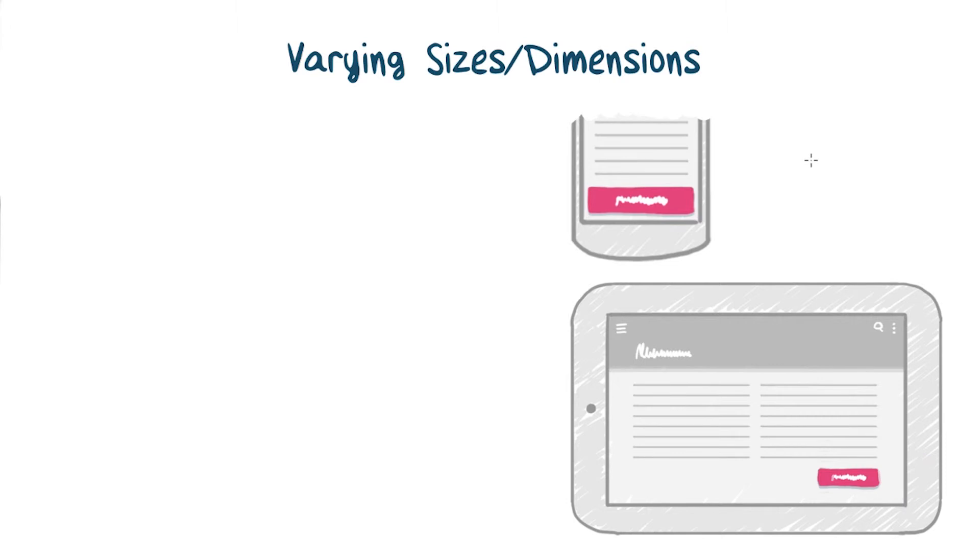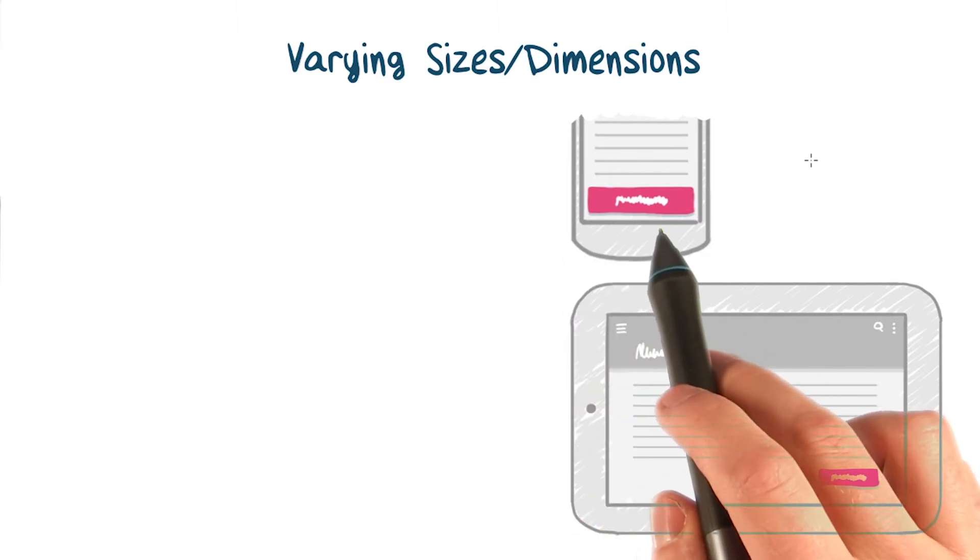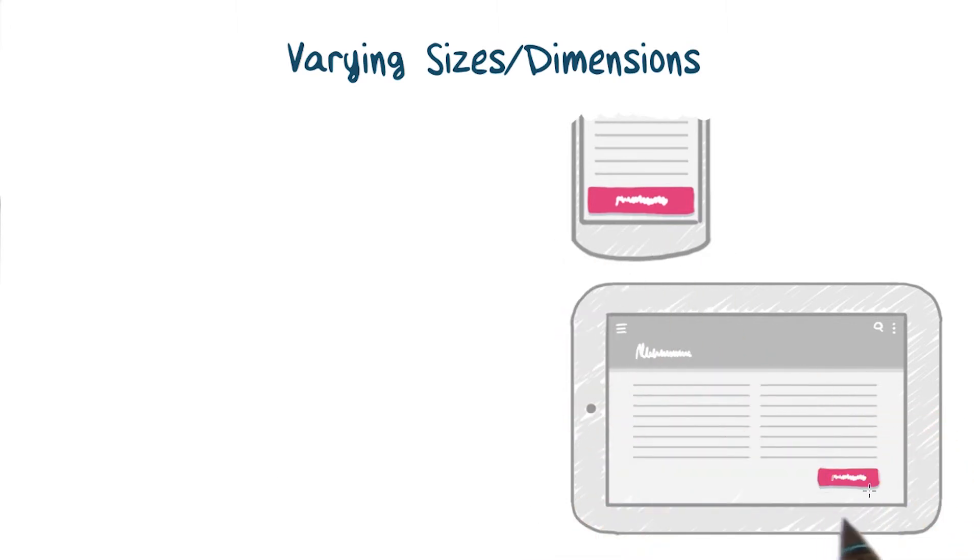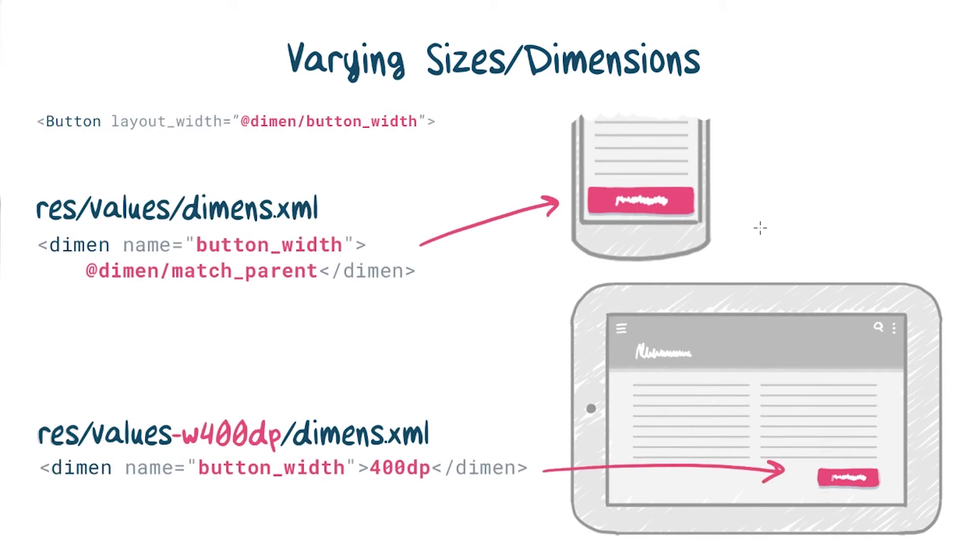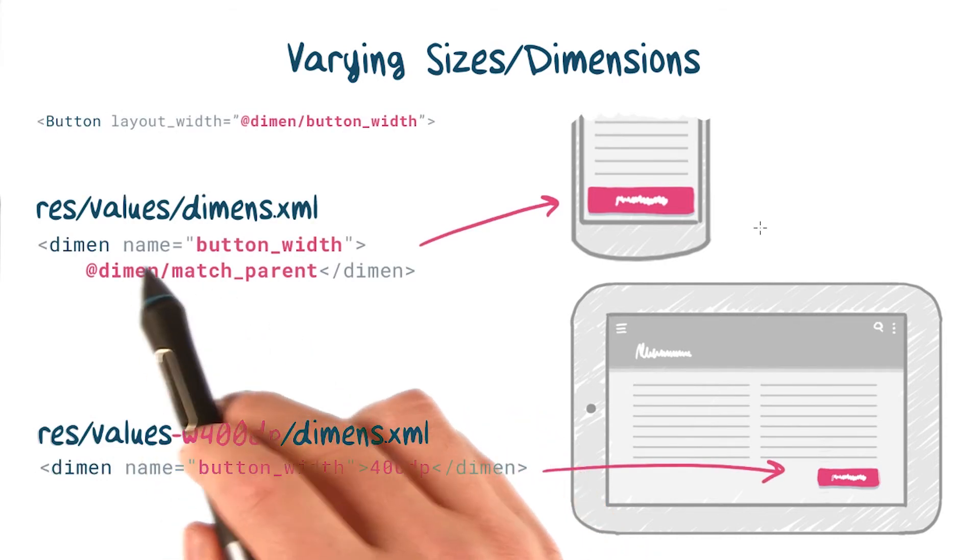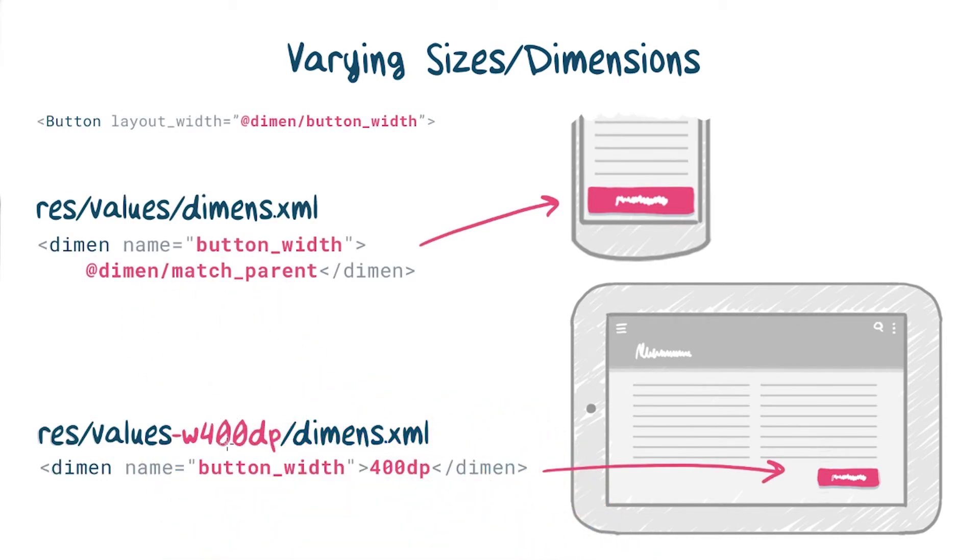Here's another example. A full width button on a phone might get too wide past 400DP. So you can create a dimension resource called button width, that's match parent on a phone, and exactly 400DP once the screen width is larger, using the W400DP qualifier.